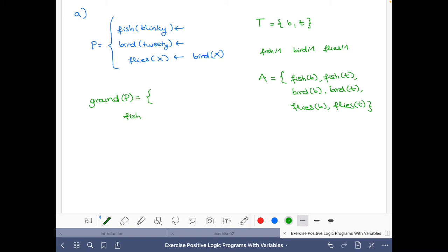So we have fish(blinky) here and bird(tweety). Now the last one is the only one that's a bit interesting because this has this variable X, and we simply have to replace this X by all the ground terms that belong to the Herbrand universe.